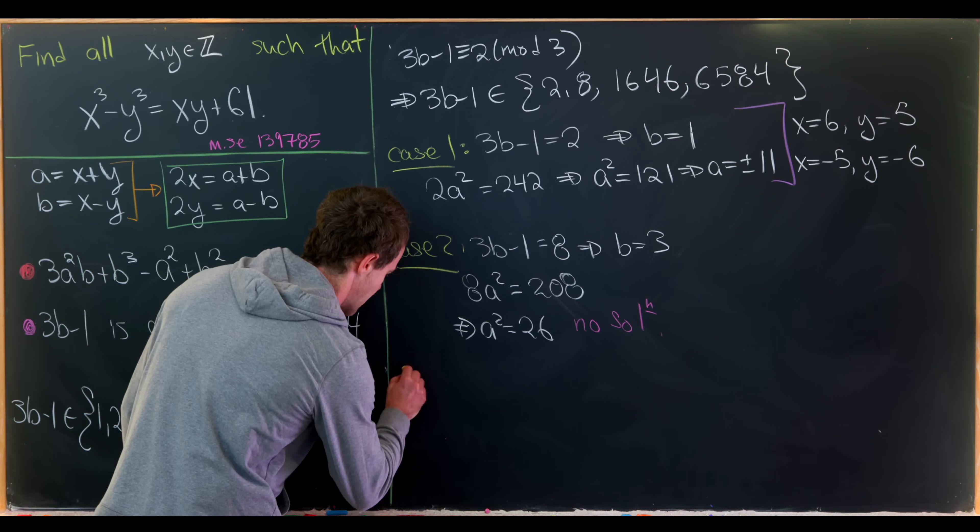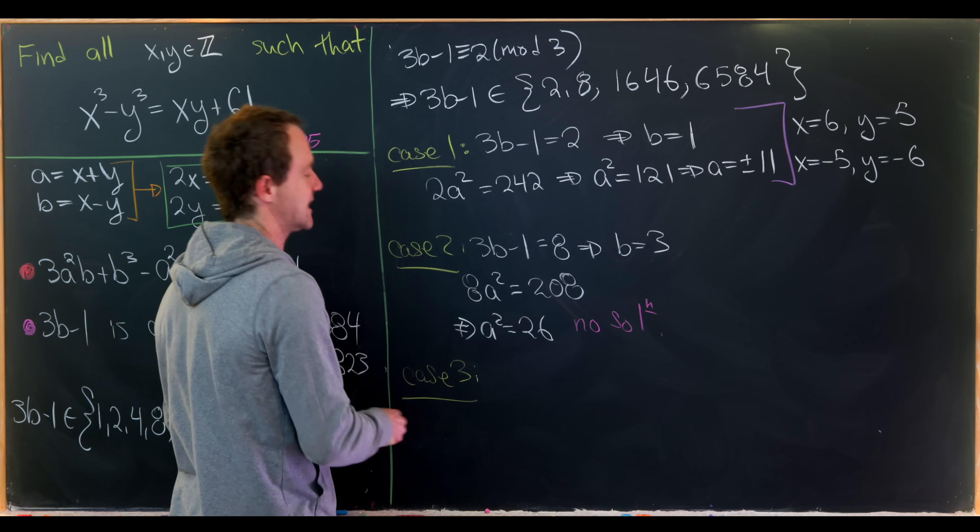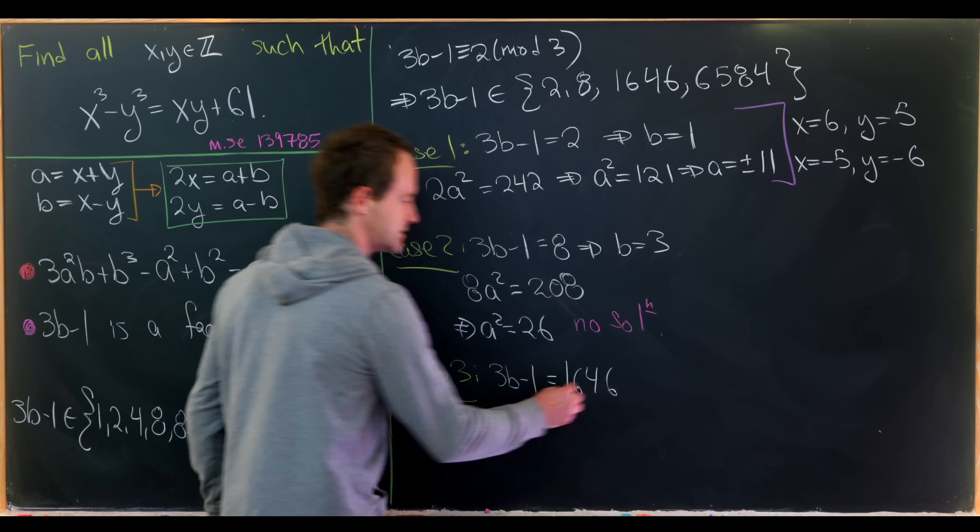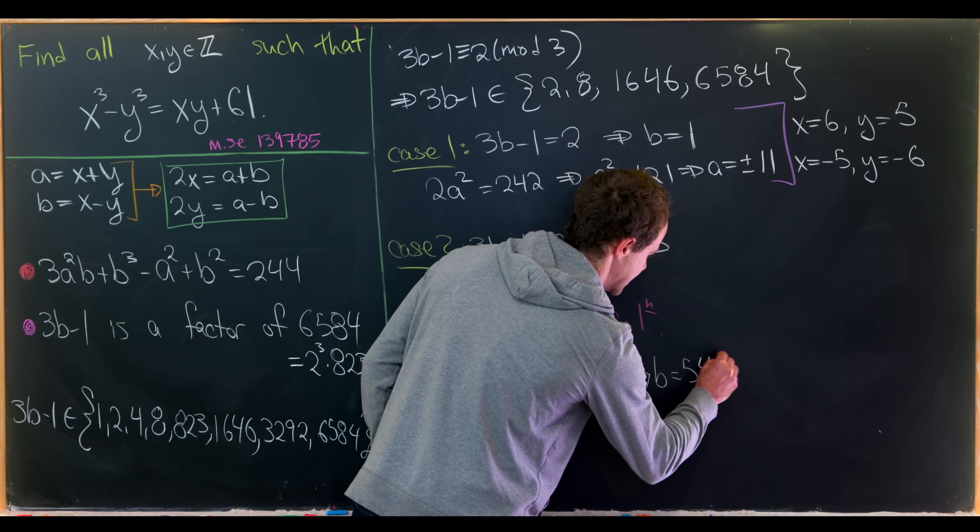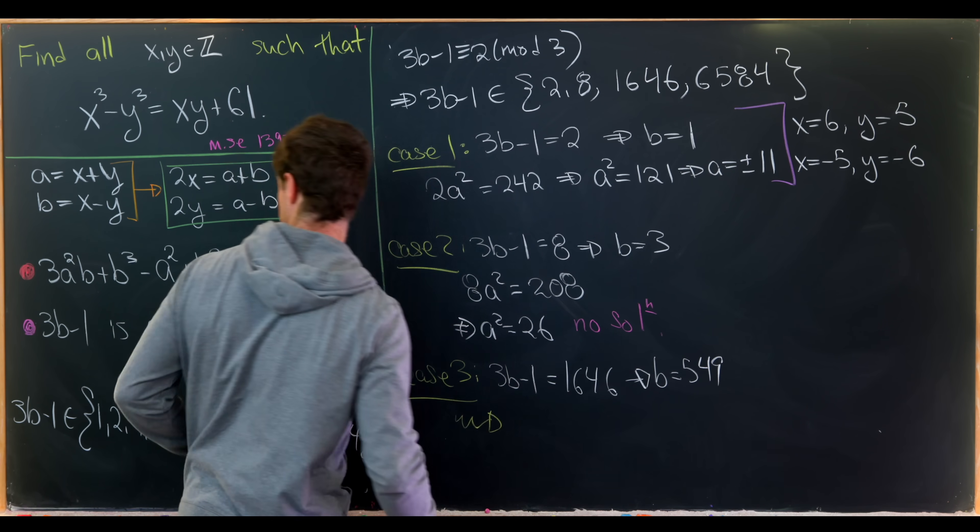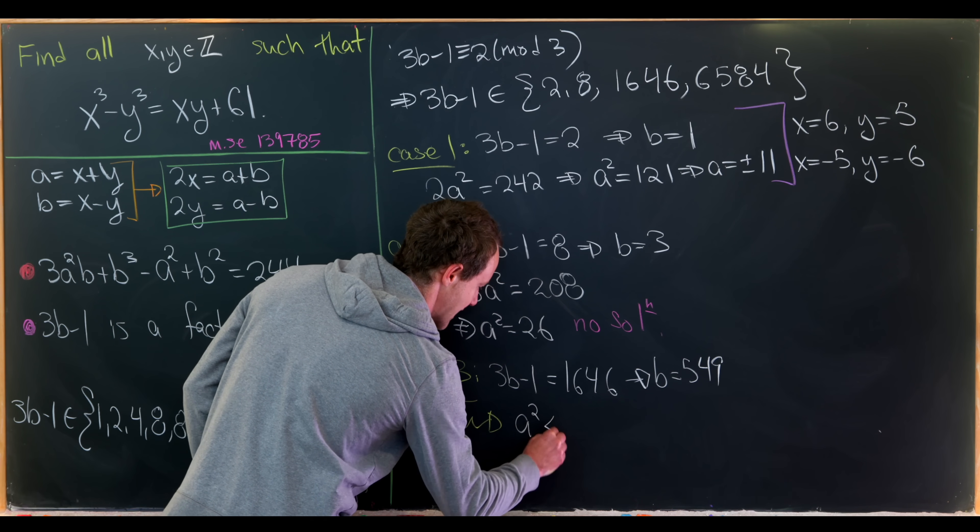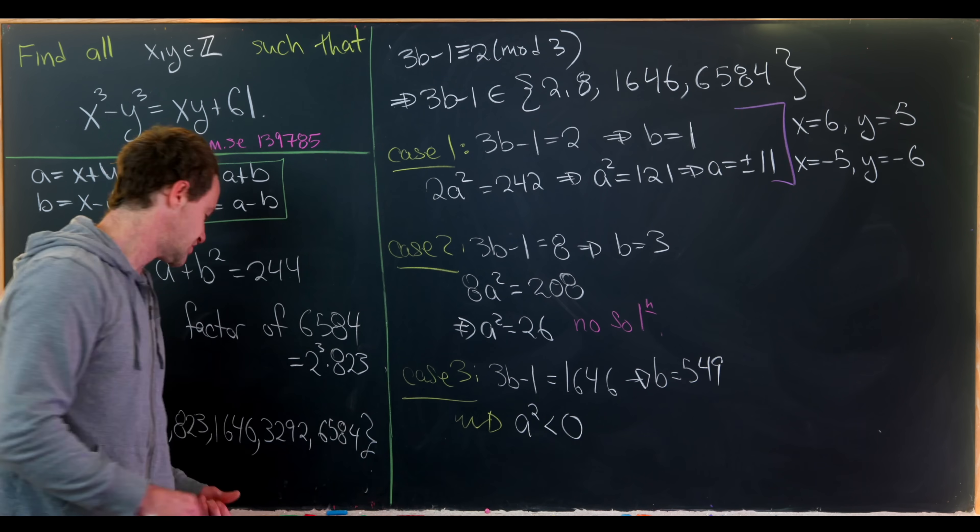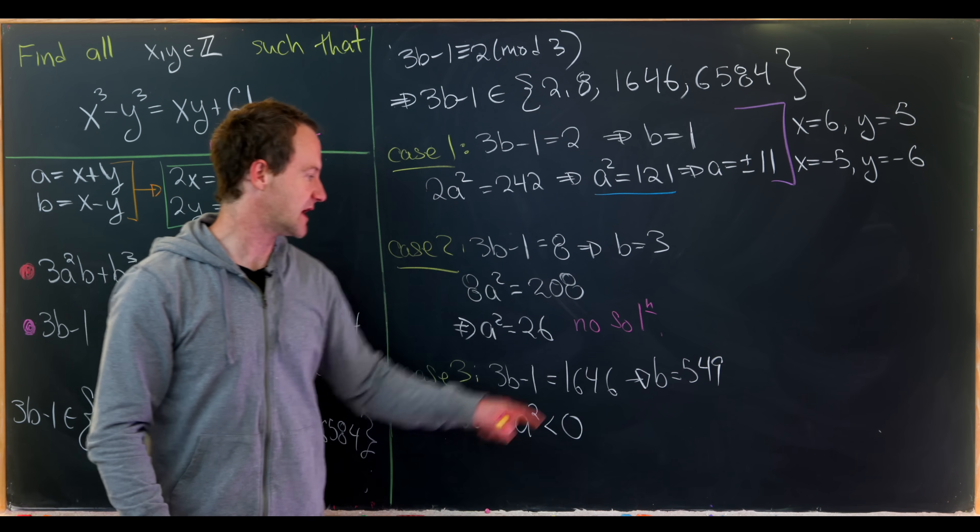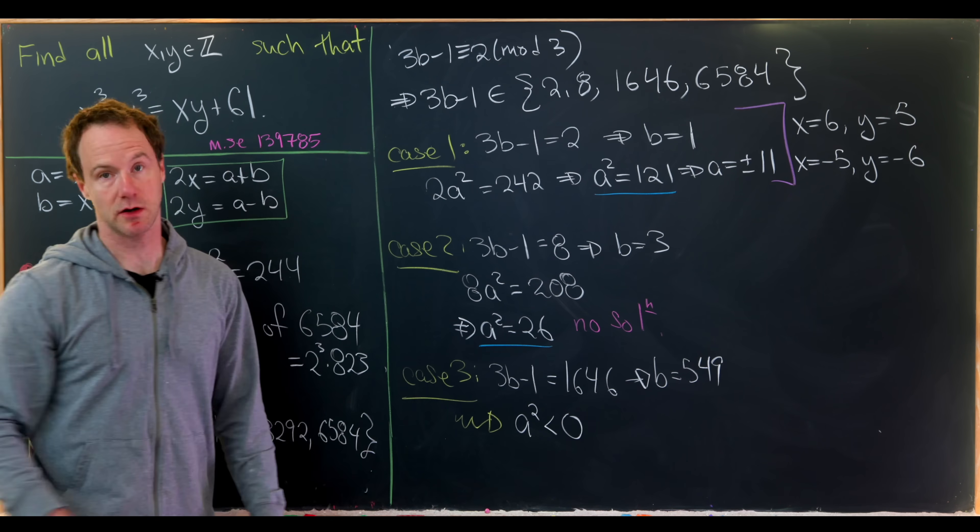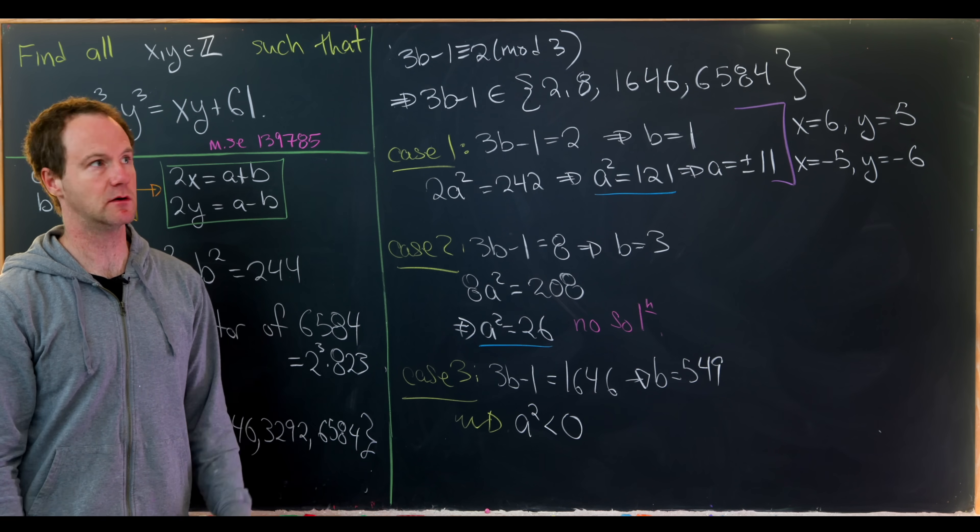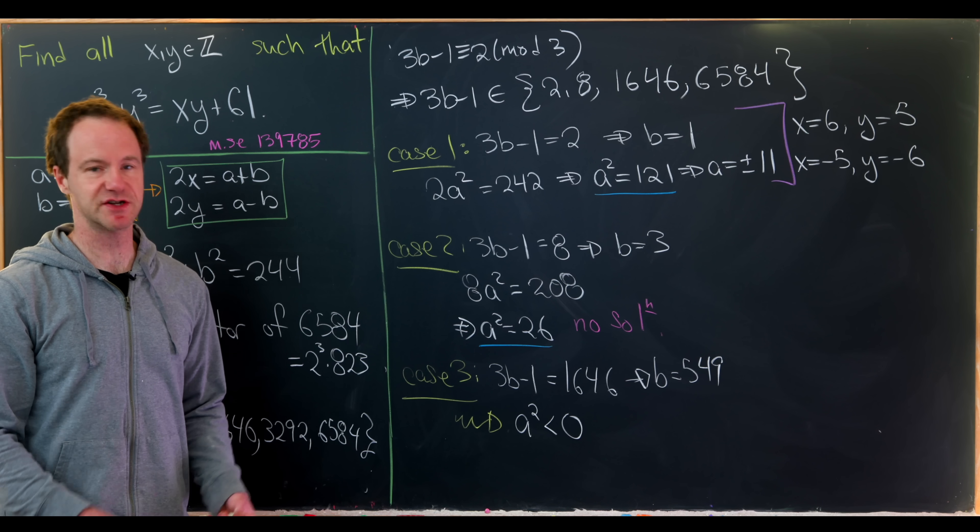That tells us to move on to our third case. Case 3 is when 3b minus 1 equals 1646. So this leads us to b equals 549. Plugging this through our equation we'll see that tells us a squared is less than 0. This shouldn't be super surprising because notice here we got a squared is 121 for b equals 1, and then if b got a little bit bigger a squared got smaller. But now b is a lot bigger which makes a squared smaller and smaller until it's less than 0. But we're working over integers and no integer squares to a negative number.